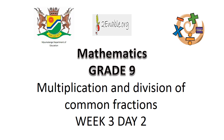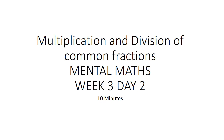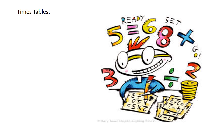Multiplication and division of common fractions. Mental map. Times tables: 9 times 11 equals 99. 7 times 7 equals 49.